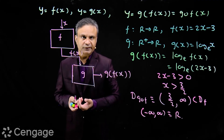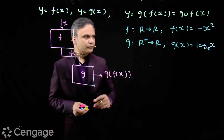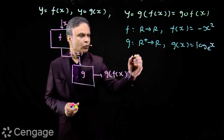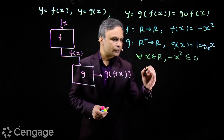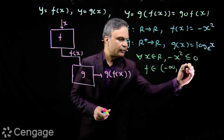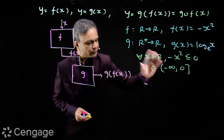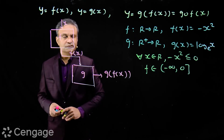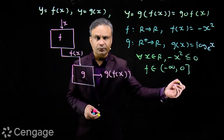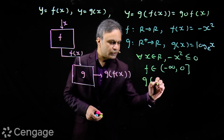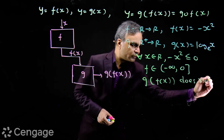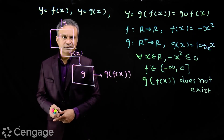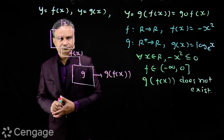Let us take one more example. Consider the same g(x) = log x, but now f from R to R where f(x) = −x². For all x belonging to R, −x² ≤ 0, so the range of f is (−∞, 0]. All these values are non-positive and are not acceptable to function g(x), since log x is defined only for positive values. Therefore, in this case, the composite function g(f(x)) does not exist — it is not defined, because the output values of f(x) are not acceptable to g(x).